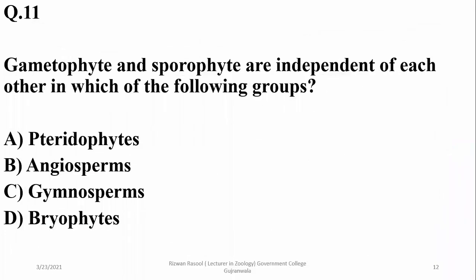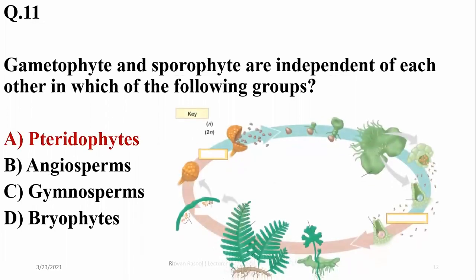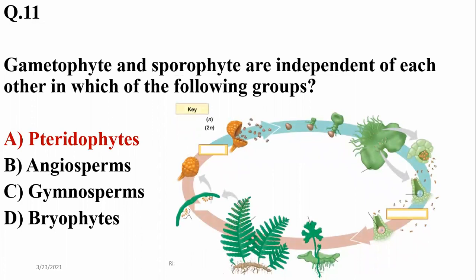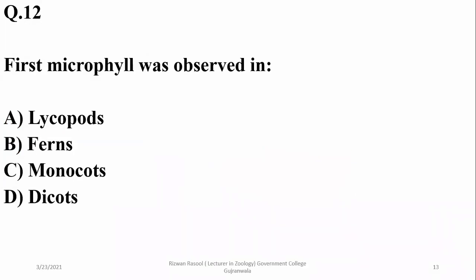Gametophyte and sporophyte are independent of each other in the group of ferns or pteridophytes, which have independent gametophyte as well as sporophyte generations. First small-size leaves, or microphylls, were observed in Lycopsida and Psilopsida.